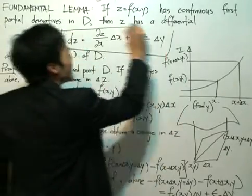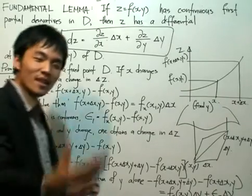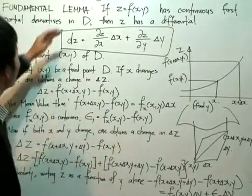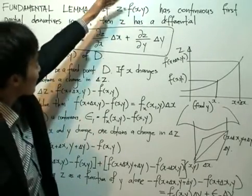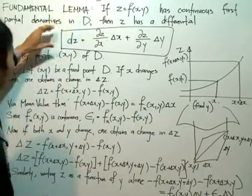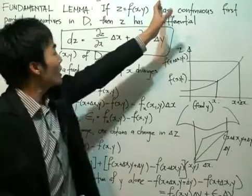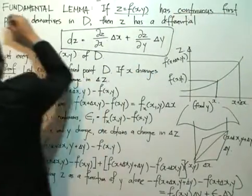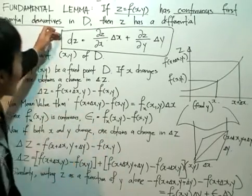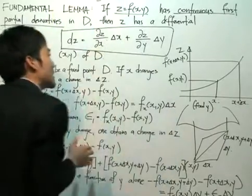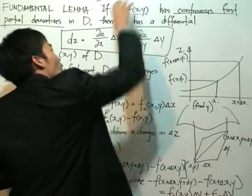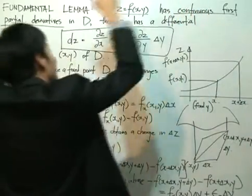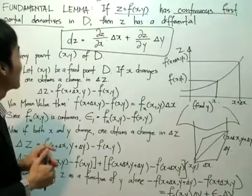Many of you might be wondering why we're spending so many lessons talking about this total differential. This is what advanced differential calculus is all about. Before we mentioned the theorem, we said that if this function has the total differential or if it's differentiable in domain D, then dz is given by this expression. But the fundamental lemma is something different — it says that as long as this function has continuous first partial derivatives, the total differential exists and thereby the function is differentiable. So this proves that the total differential exists by merely checking whether the function has continuous first partial derivatives.